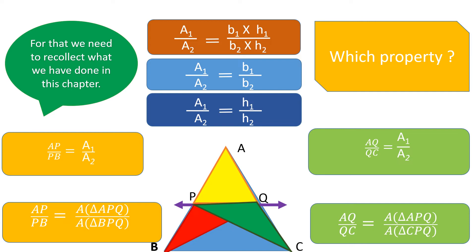Now we have ratio one as AP/PB and ratio three as AQ/QC. They should both equal ratio two. But observe: AP/PB equals area of APQ / area of PBQ, and AQ/QC equals area of APQ / area of CPQ. The denominators are not equal — one is area of triangle BPQ and the other is area of triangle CPQ. We need to think about this.